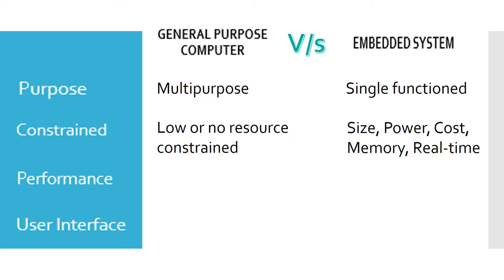Embedded systems have very tight resource constraints — resources like power, cost, memory, and even the physical size of the system. Also, for an embedded system, in most of the cases, it is required to respond in real time. For example, you don't want your brakes to work after pressing the pedal by a couple of seconds.